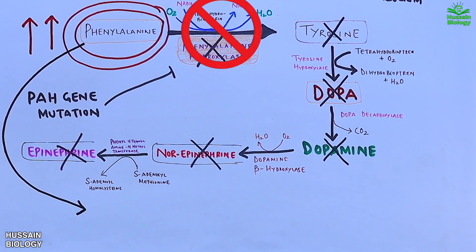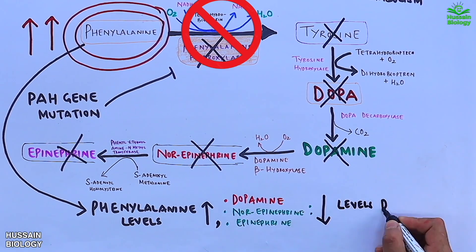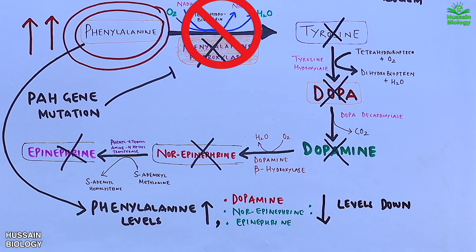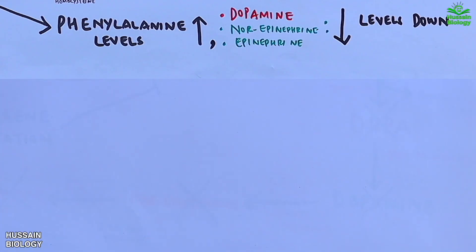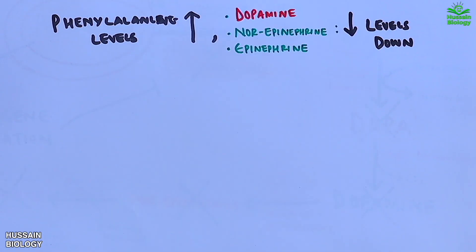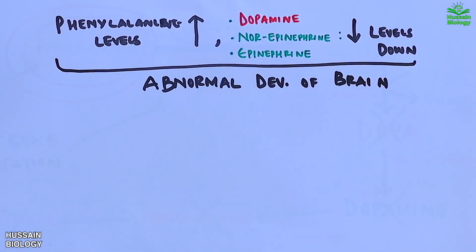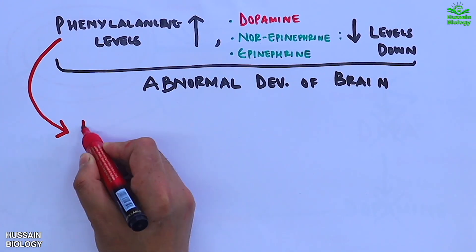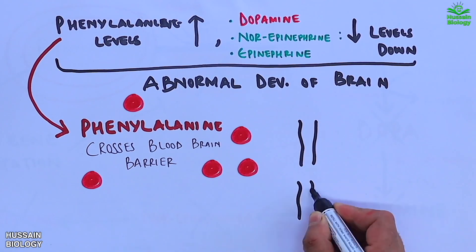The final outcome of this mutation is accumulation of phenylalanine — phenylalanine levels shoot up in the blood while dopamine, epinephrine, and norepinephrine come down. The elevated phenylalanine is also converted to phenylketones, which are harmful to the brain at high levels. All these factors — elevated phenylalanine and reduced neurotransmitters — can adversely affect the brain, ultimately leading to abnormal brain development.